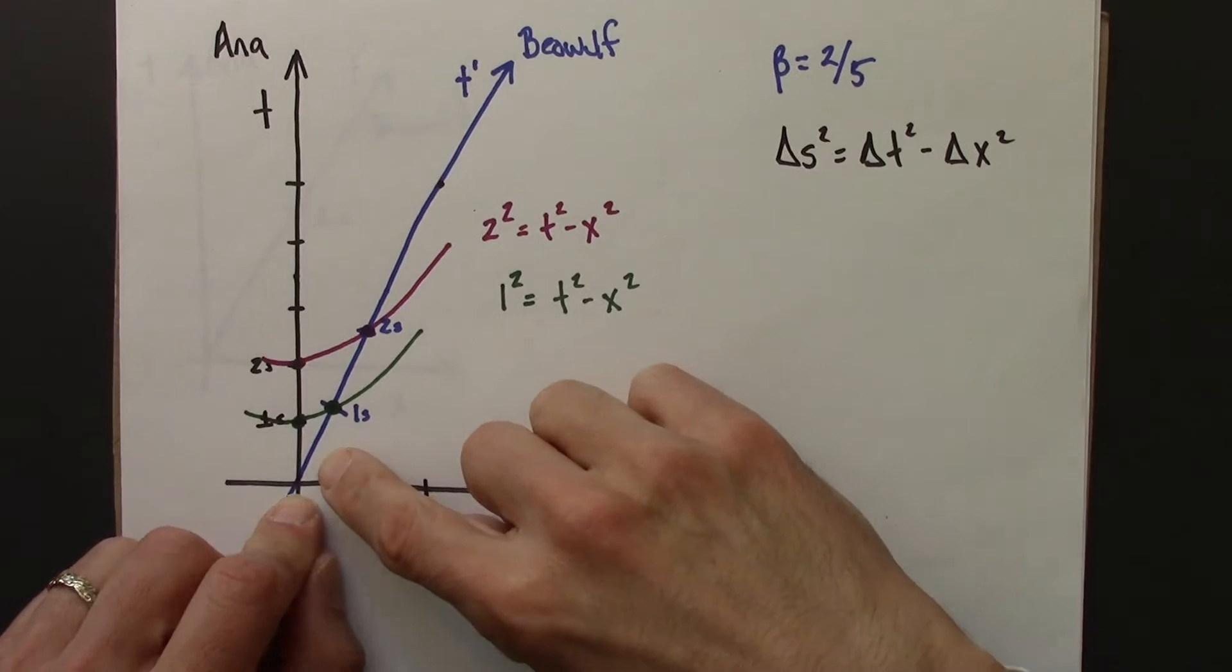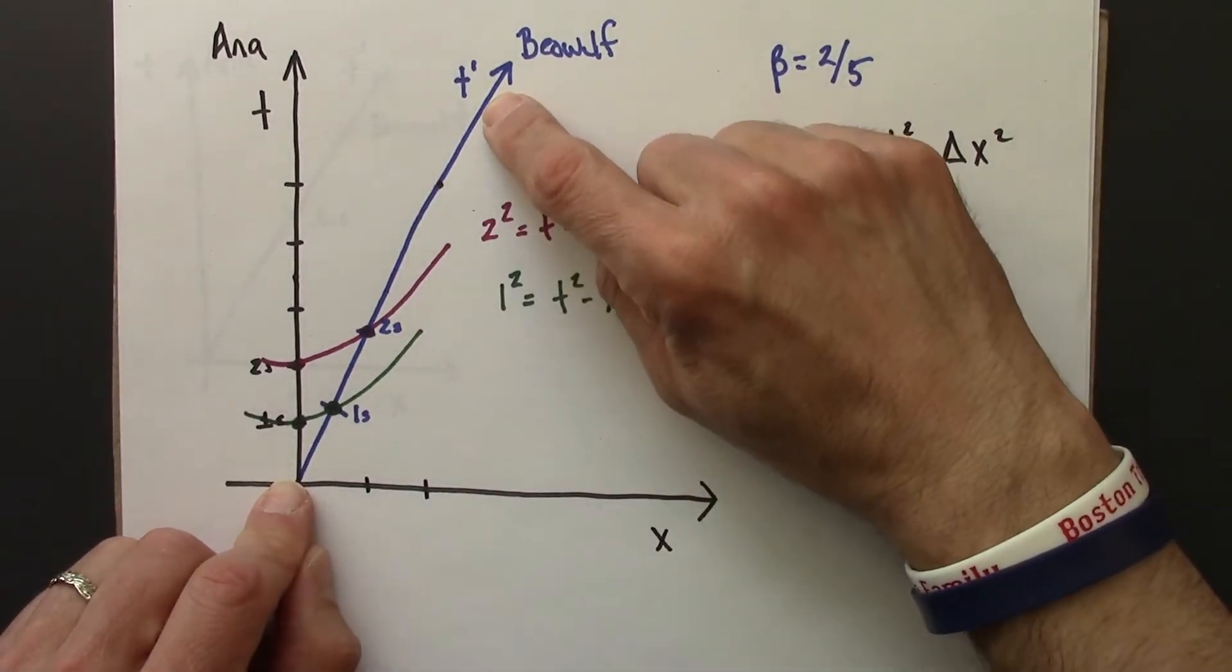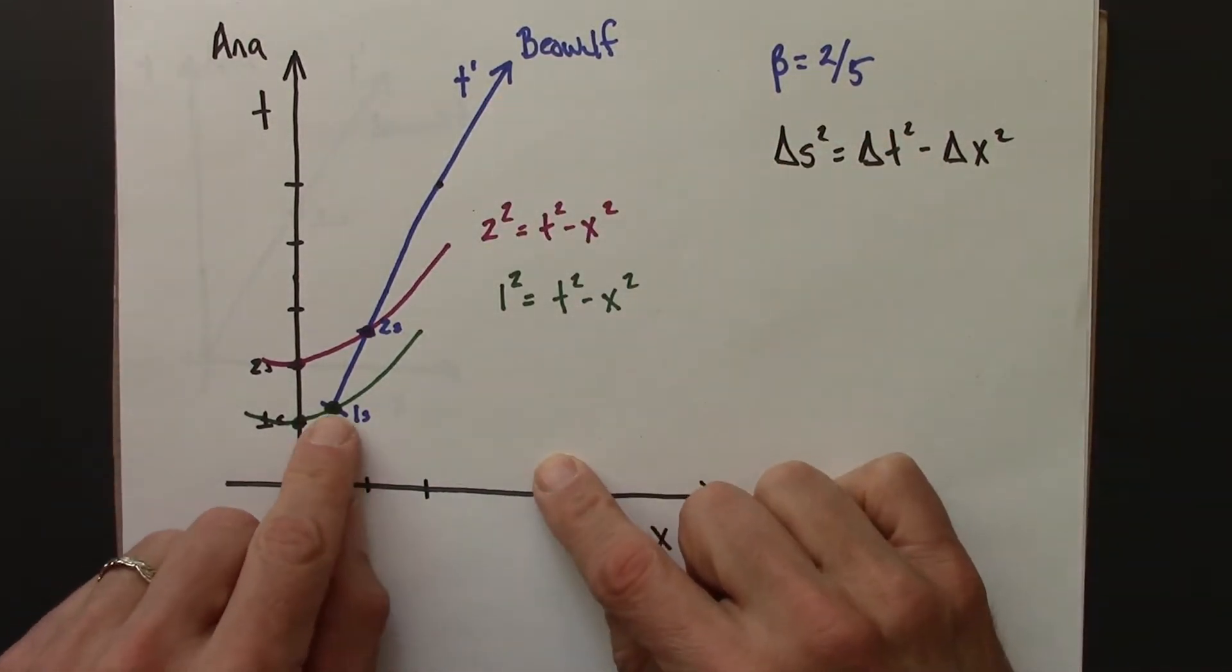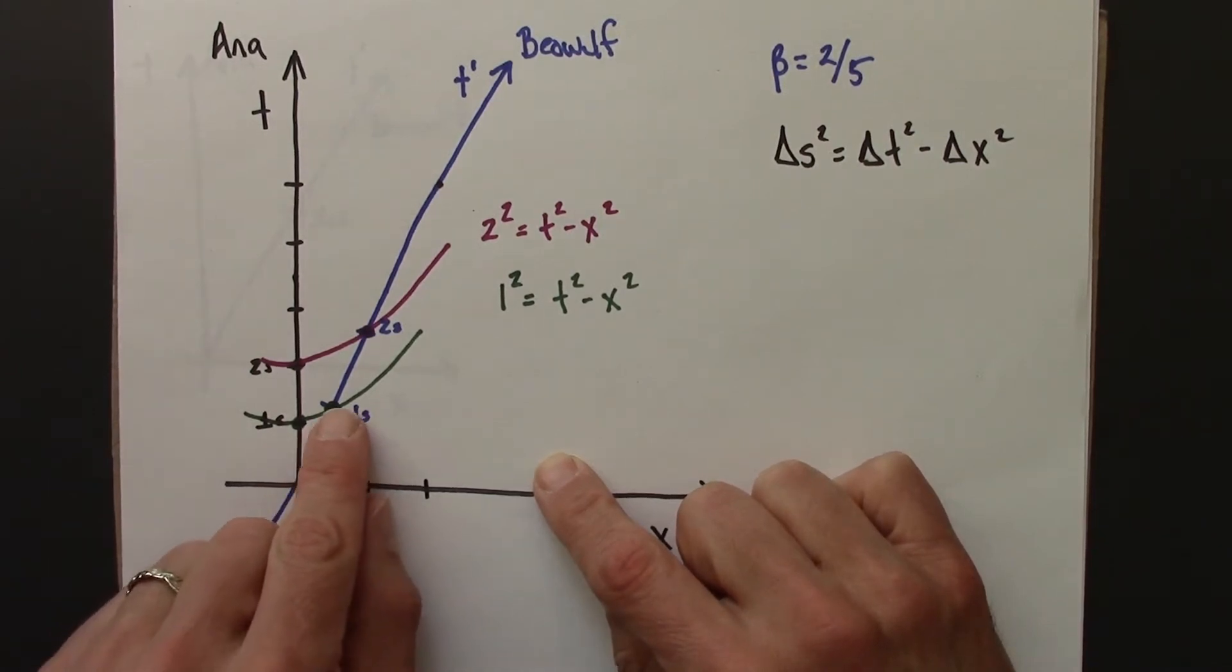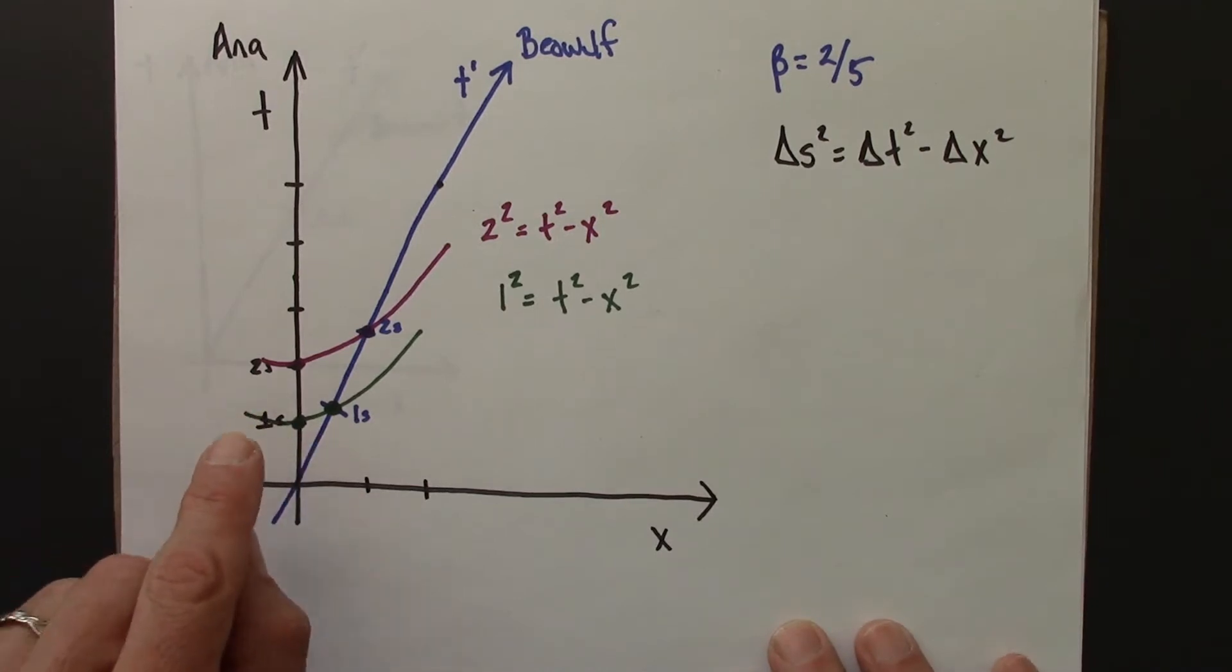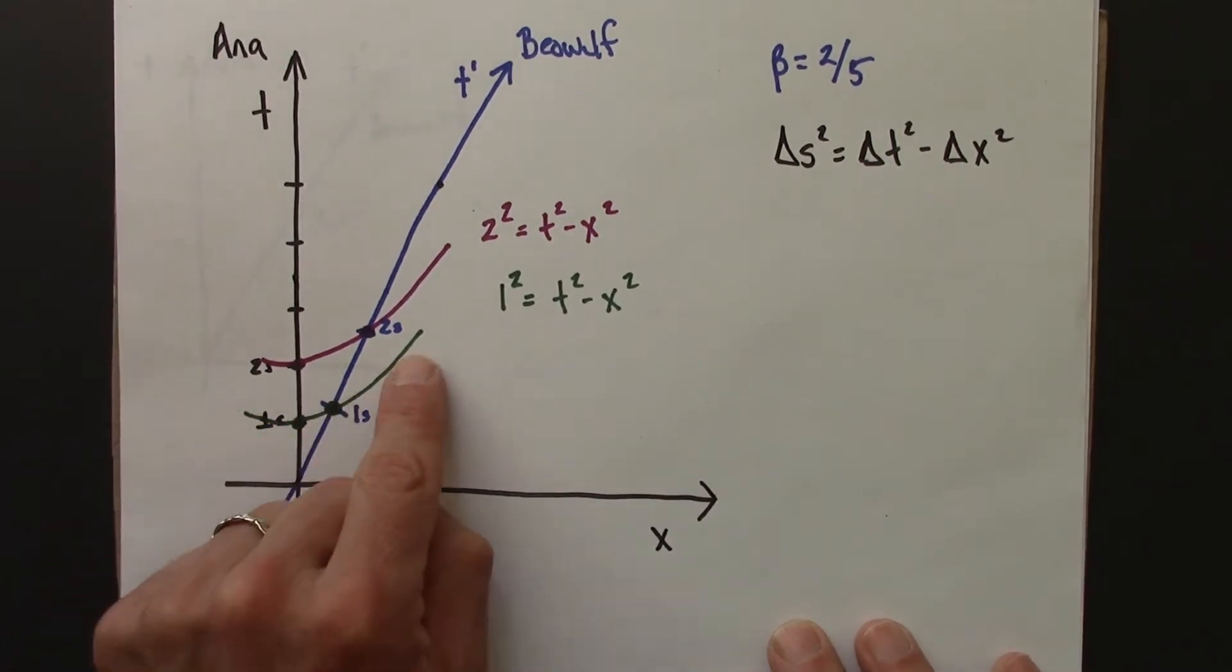So we've seen geometrically how to calibrate the t' axis. The one second mark on the t' axis is connected to the one second mark on the t-axis by a hyperbola.